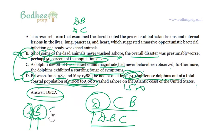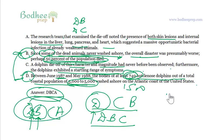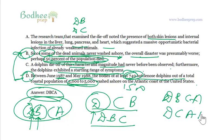A dolphin die-off of this magnitude — considering both D and B — and then it says furthermore the dolphins exhibited a startling range of symptoms. What is that symptom? The research team that examined the die-off noted the presence of both skin lesions and internal lesions in the liver, lung, pancreas, and heart. So DBCA is the right order.